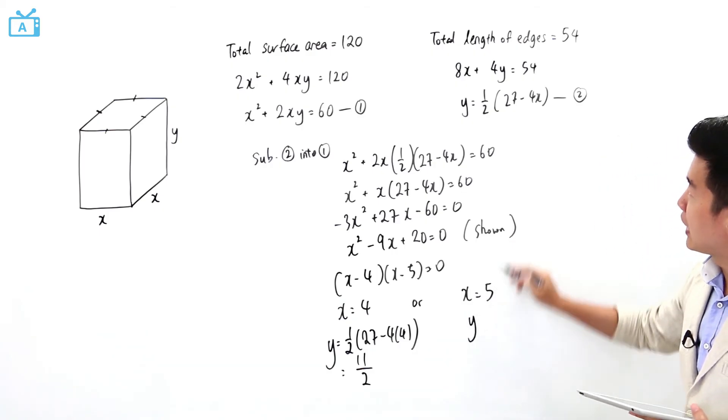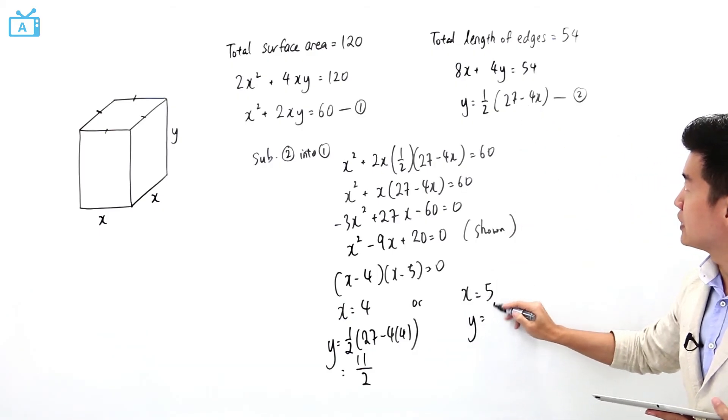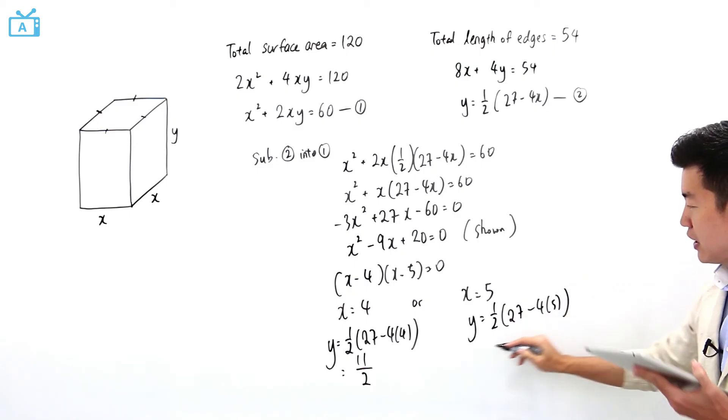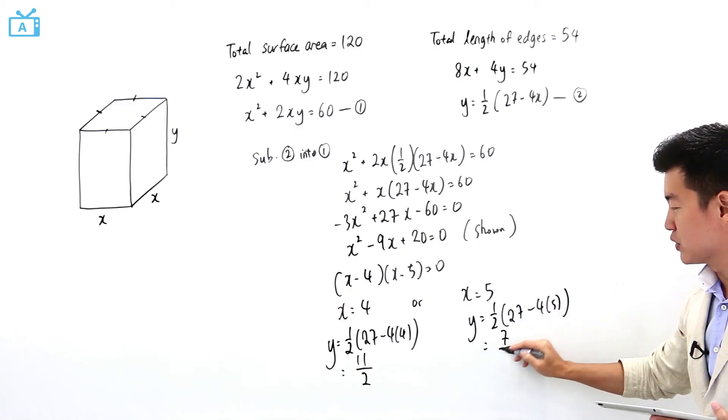Or if I were to sub 5 into the x over here, y is going to be half of 27 minus 4 times 5. Y is going to be equal to 7 over 2.